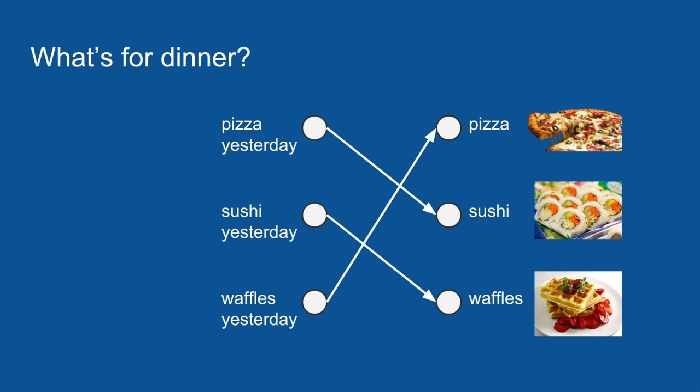Knowing this, we can make a new neural network. In our new one, the only input that matters is what we had for dinner yesterday. So if we had pizza for dinner yesterday, it will be sushi tonight; sushi yesterday means waffles tonight; and waffles yesterday means pizza tonight. It becomes a very simple voting process and it is right all the time because your flatmate is incredibly consistent.